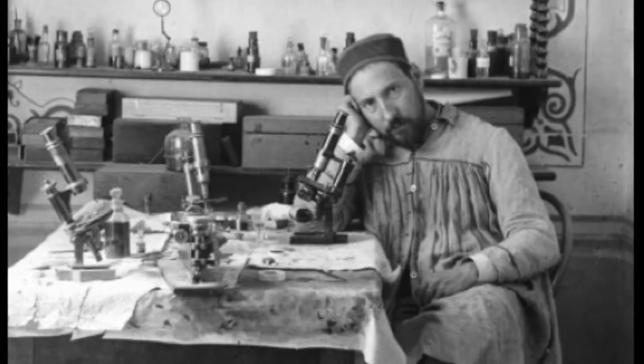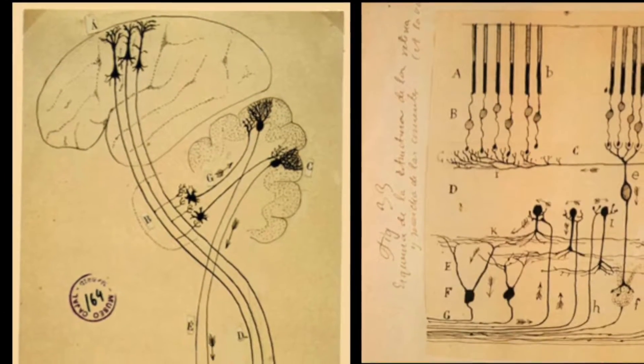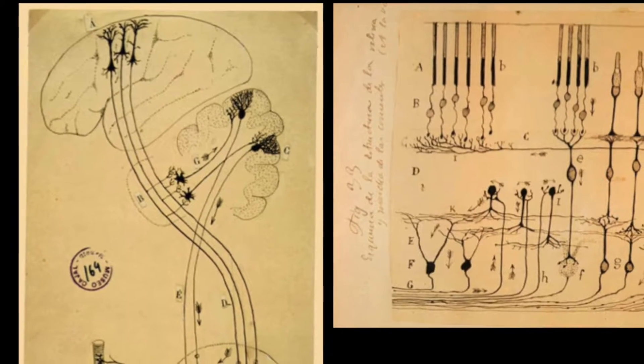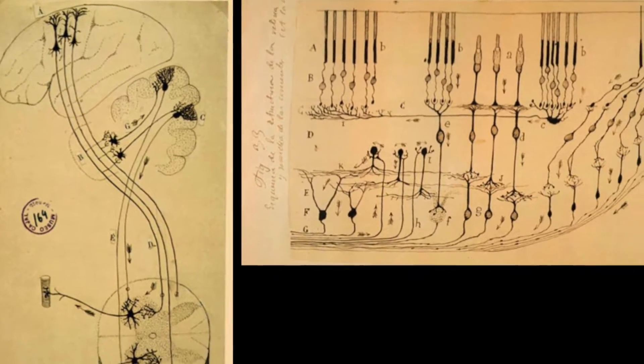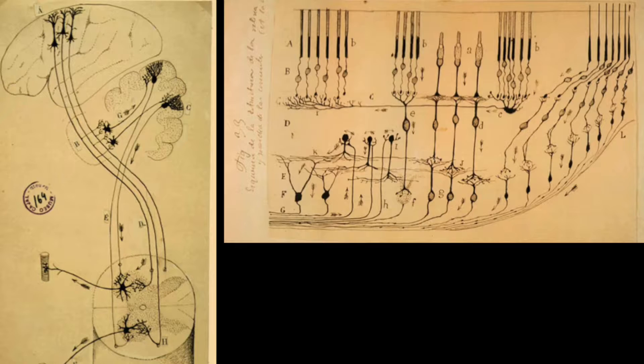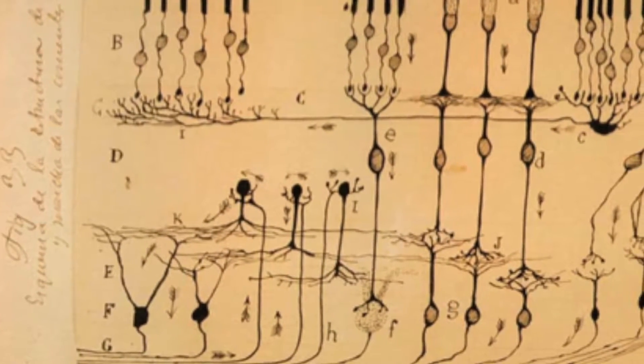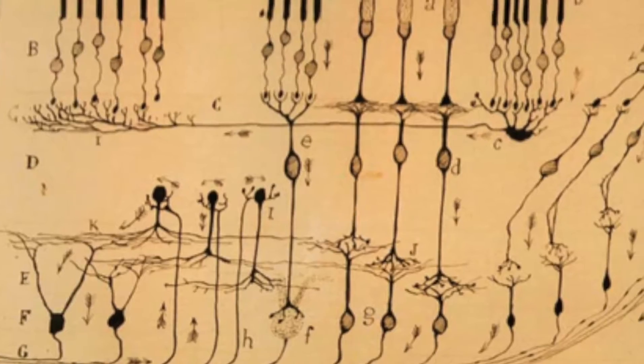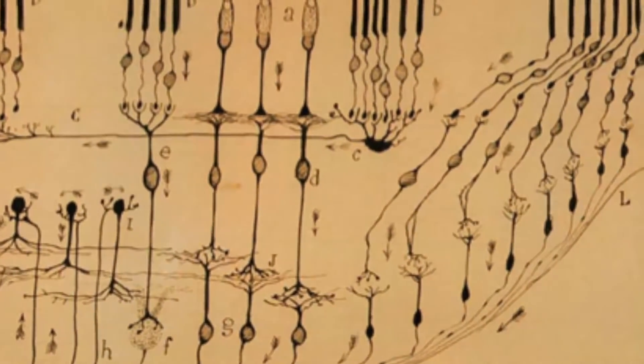When Ramón y Cajal discovered that individual neurons, or nerve cells, were the basic building blocks of the nervous system using the Golgi stain more than a century ago, he simultaneously revealed the tremendously diverse shape or kinds of nerve cells in each region of the brain he laid his eyes upon. Since then, this diversity and heterogeneity has been the enduring theme that further manifests at the physiological, molecular, and functional levels revealed by subsequent and contemporary techniques.